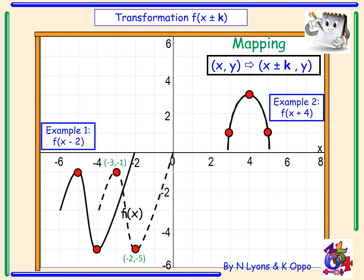Example two: we have to draw the graph of f(x + 4). So each point is going to move four places to the left. Our new coordinate points become (-1, 1), (0, 3), and (1, 1).